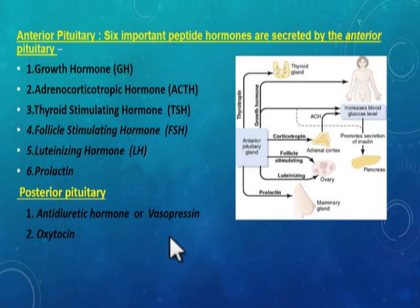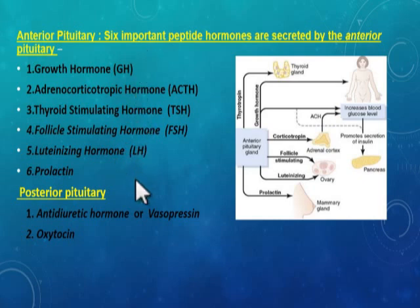The anterior pituitary secretes six hormones, all peptide or protein in nature: growth hormone, adrenocorticotropic hormone (ACTH), thyroid-stimulating hormone (TSH), follicle-stimulating hormone (FSH), luteinizing hormone (LH), and prolactin. FSH and LH are together known as the gonadotropic hormones. From the posterior pituitary we have two hormones: antidiuretic hormone (ADH) or vasopressin, and oxytocin.